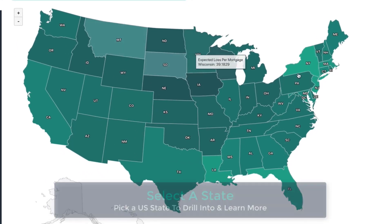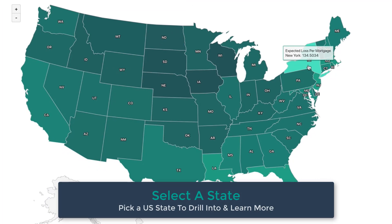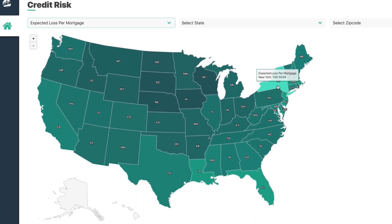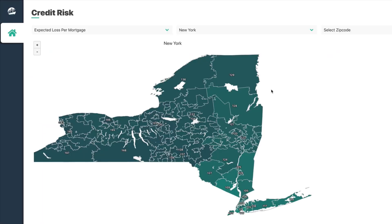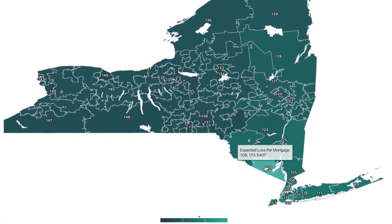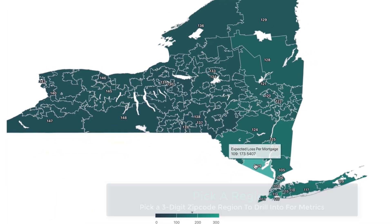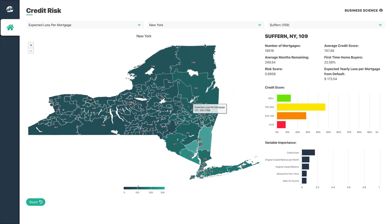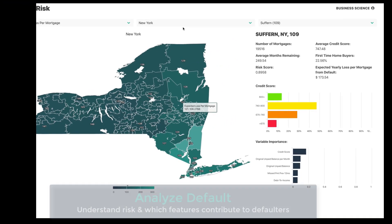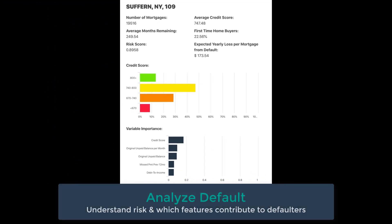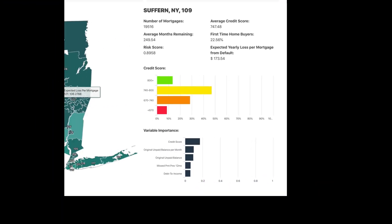Next, select a state to drill into. Finally, pick a region by the three-digit zip code. This pulls up the regional risk measures, showing us which features contribute to mortgage loan defaults in the region.